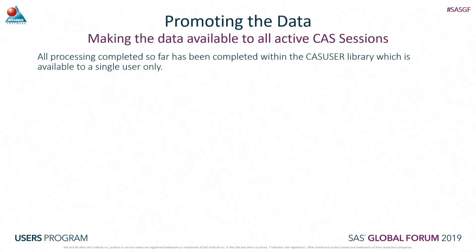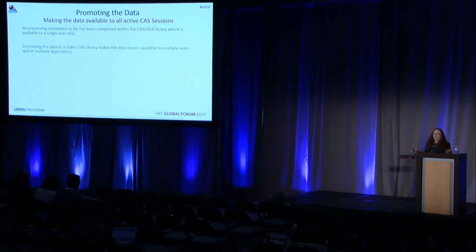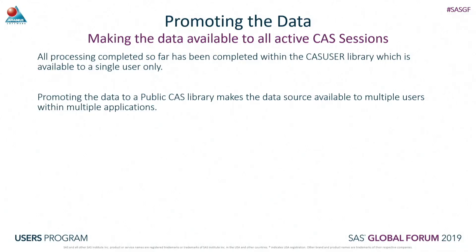All of the processing completed so far has been done in my own CAS user library. This library is only accessible to a single user - me. So if I want to make this available to other users, I can promote that data to a public CAS library. This doesn't just make it available to multiple users, but also to multiple applications.